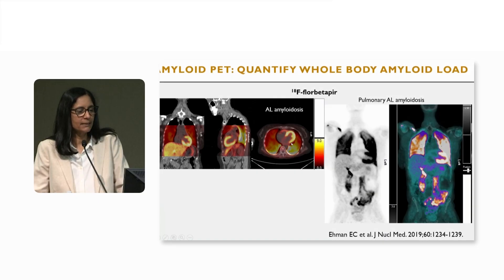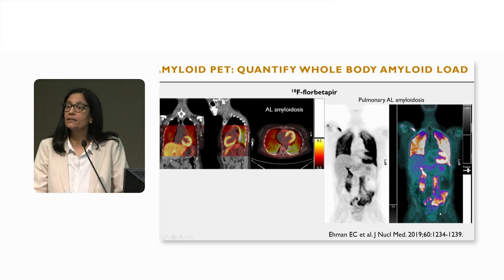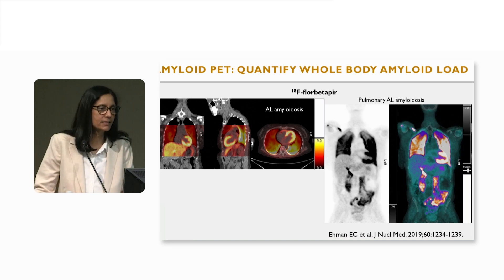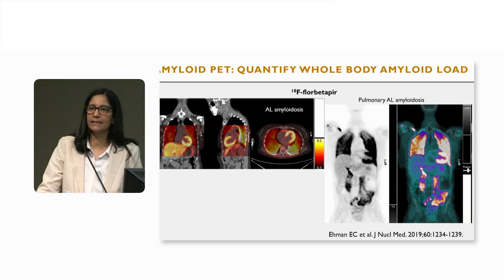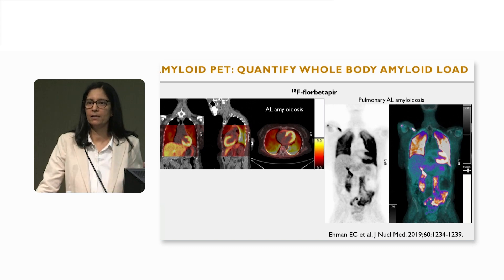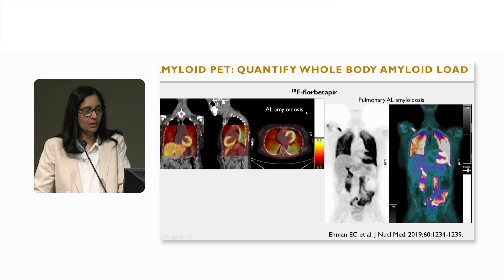These PET tracers image not only the heart but also the lungs and the whole body — other organs as well. That's a huge advantage for a systemic disease such as amyloidosis, which affects not just the heart but also the liver, kidneys, spleen, and various other organs.